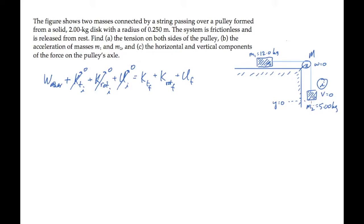And then the system is released. It falls. If we let mass 2 fall by a distance h, picking up a speed v sub f, final speed, then mass 1 will slide horizontally the same distance, picking up the same speed. And the pulley will begin to rotate, reaching a final angular speed omega f.